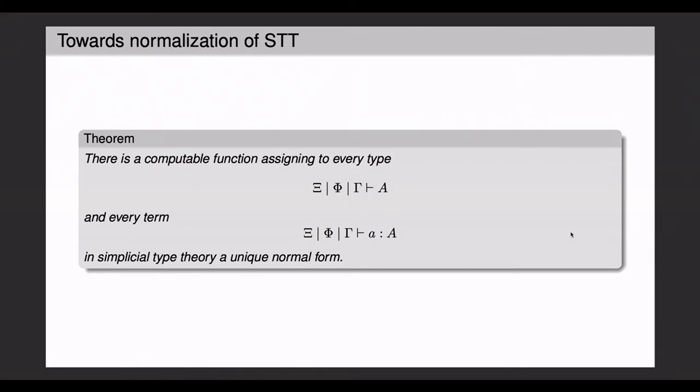Statement of normalization reads as follows. Given any type in simplicial type theory or any term, both can be brought into a unique normal form in an effective way, i.e. using a computable function. So note that we are working in this kind of extended context here, where a type family A not only depends on a usual type context gamma, but also on a shape or a tope phi in a cube context xi, and likewise for the terms or the sections.